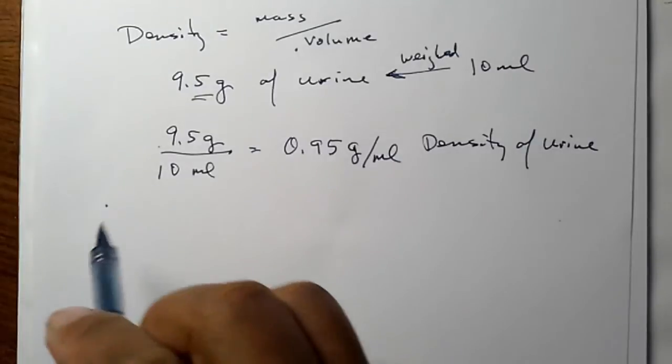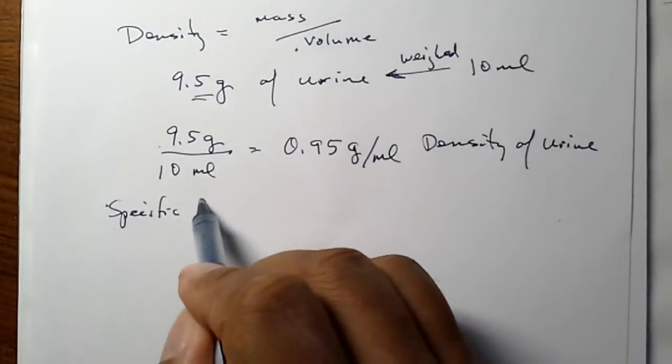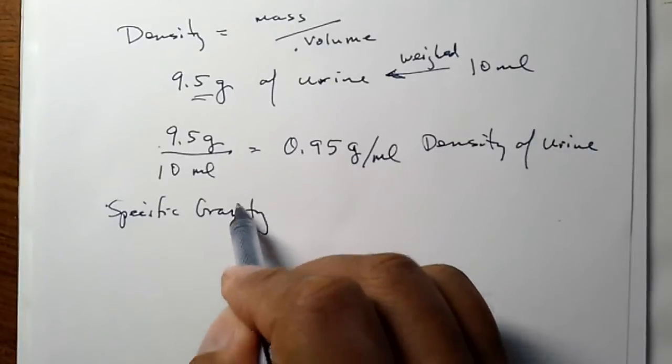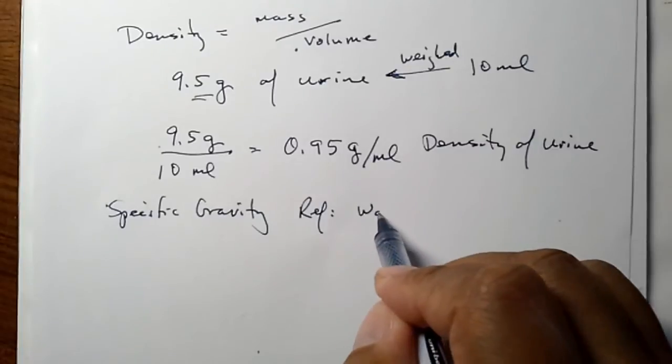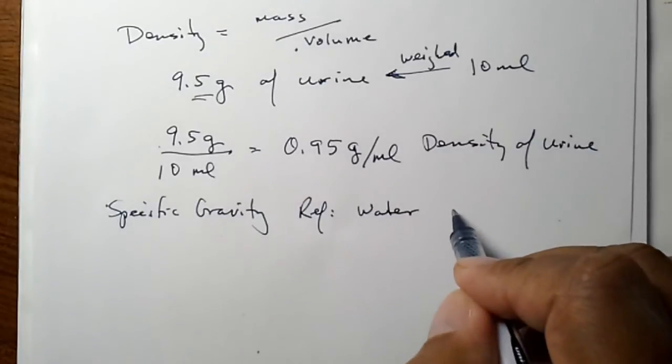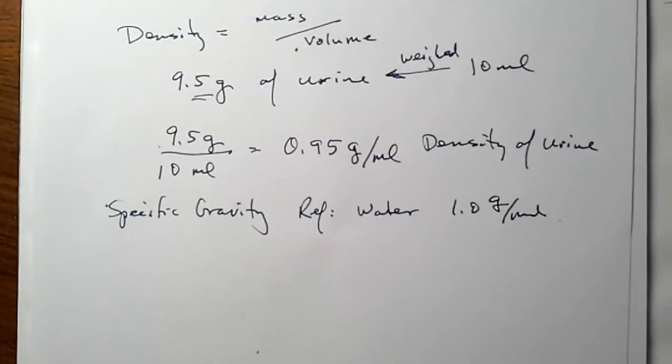But in order to find specific gravity, we'll need a reference, and that's usually water. Water has a density of 1 gram per milliliter, a little less than 1, closer to 0.995, but let's say 1.